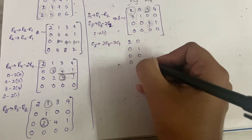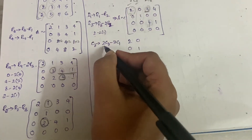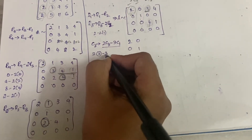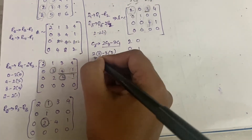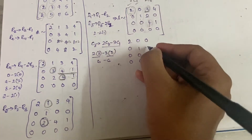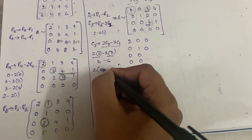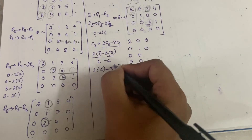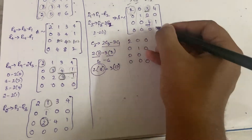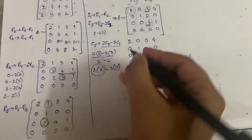Columns 2 and 4 remain as they are. For 2·C3 minus 3·C1: element-wise — 2×3−3×2=0; 2×0−3×0=0; 2×4−3×0=8; 2×1−3×0=2... but let us recheck: the result in column 3 becomes 0, 0, 8, 0.